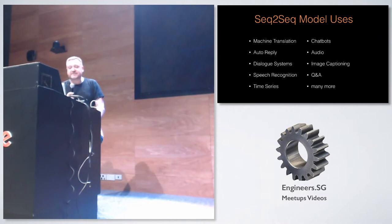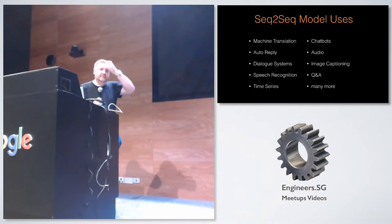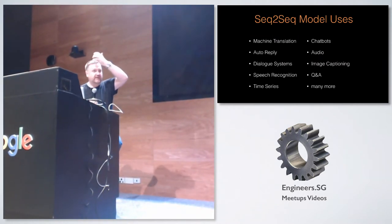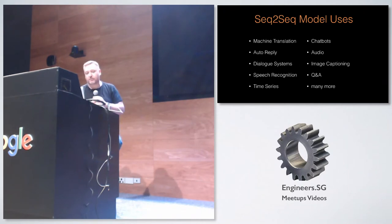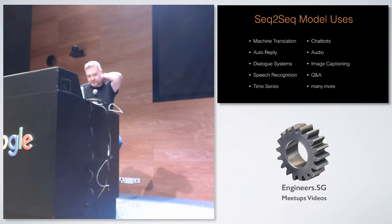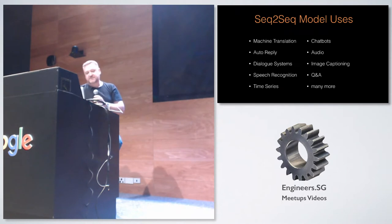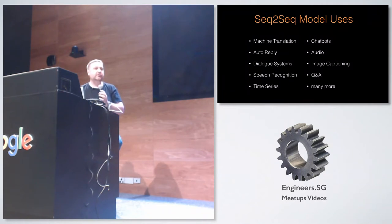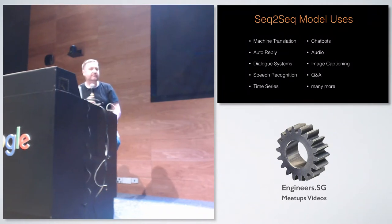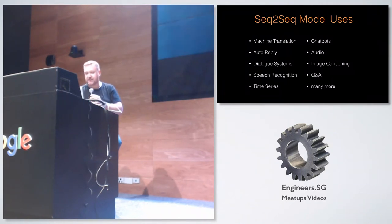Sequence-to-sequence models are used for a whole bunch of different things — everything from chatbots, to speech to text, to dialogue systems, to Q&A, to image captioning, which Martin's going to be looking at later on tonight, even to things like Google's auto-reply system for Gmail emails.